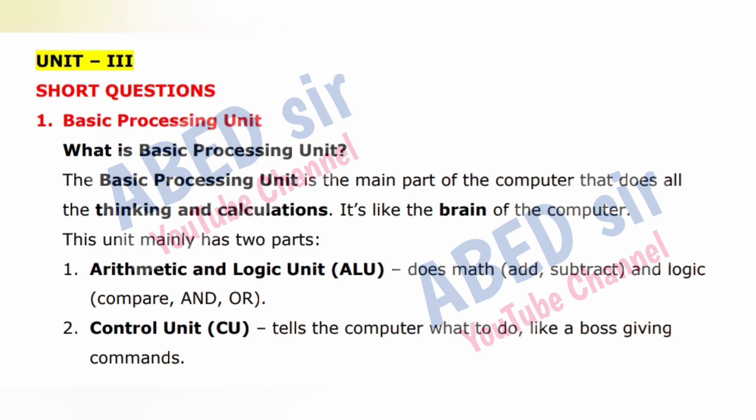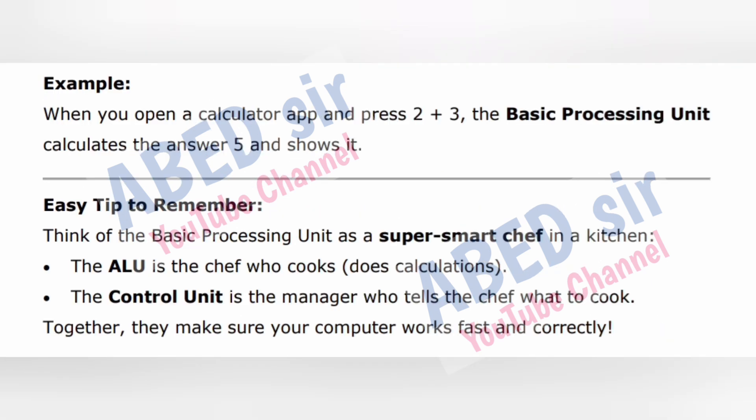2. Control Unit (CU) tells the computer what to do, like a boss giving commands. Example: When you open a calculator app and press 2 plus 3, the Basic Processing Unit calculates the answer 5 and shows it. Easy tip to remember: Think of the Basic Processing Unit as a super smart chef in a kitchen. The ALU is the chef who cooks (does calculations), and the Control Unit is the manager who tells the chef what to cook. Together, they make sure your computer works fast and correctly.